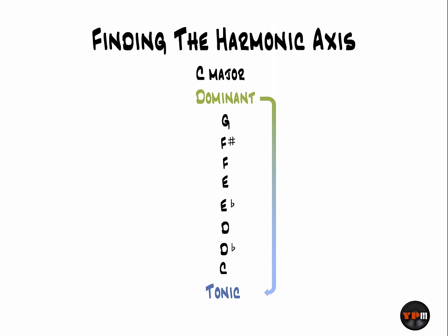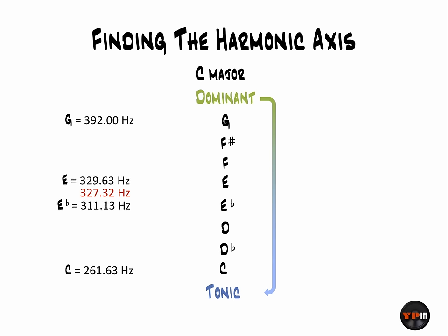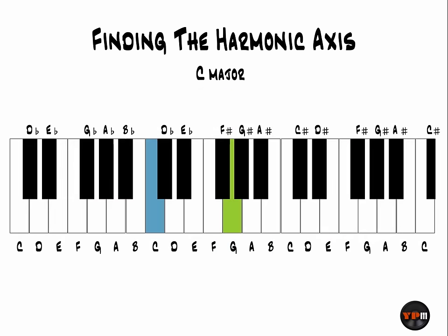From a science and math perspective: middle C resonates at 261.63 Hz, its dominant at 391 Hz, and the midpoint of the axis we're talking about is at 327.32 Hz. But when you try to find that on the keyboard, you can't — it falls between E and E flat. Above this axis is the positive side; below is the negative side. Using the axis as zero on our number line, we count outward in both directions, numbering each note in the process, creating a set of positive notes and their negative counterparts. These numbers will be used to replace standard harmony with negative harmony.